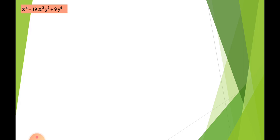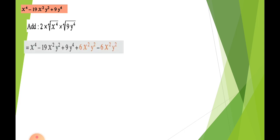For x⁴ − 19x²y² + 9y⁴, we find 2 times the square root of the first term times the square root of the third term: 2 × √(x⁴) × √(9y⁴) = 2 × x² × 3y² = 6x²y². So we add and subtract 6x²y², writing: x⁴ − 19x²y² + 9y⁴ + 6x²y² − 6x²y².